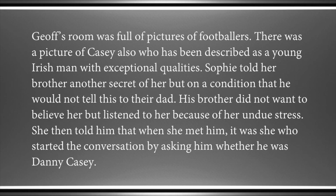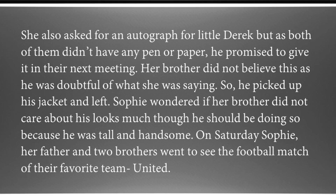Joff's room was full of pictures of footballers, including a picture of Casey described as a young Irish man with exceptional qualities. Sophie told her brother another secret on condition that he would not tell their dad. Her brother listened because of her undue stress. She told him that when she met Casey, she started the conversation by asking if he was Danny Casey, and she asked for an autograph for little Derek — but as neither had a pen or paper, he promised to give it in their next meeting. Her brother did not believe this and, picking up his jacket, left.